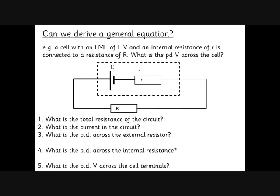We can derive the formulas algebraically. The total resistance is R + r (external plus internal). The current is I = E / (R + r). The PD across the external resistor is V = IR, which can also be written as V = ER / (R + r). The PD across the internal resistance is Ir. So the PD across the cell terminals is V = E − Ir. I'd advise thinking of this in terms of just having two resistors — it just happens that one of them is inside the battery.